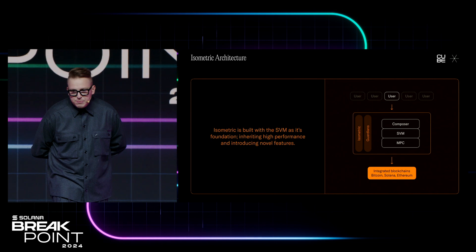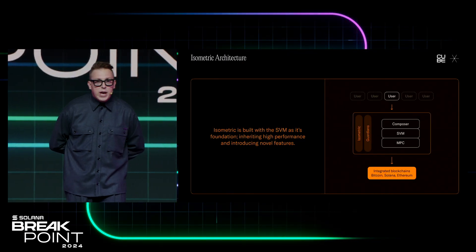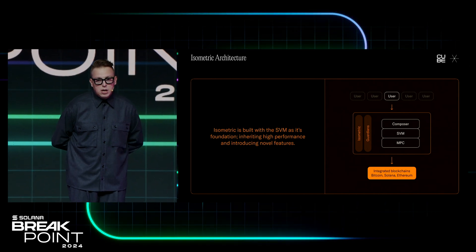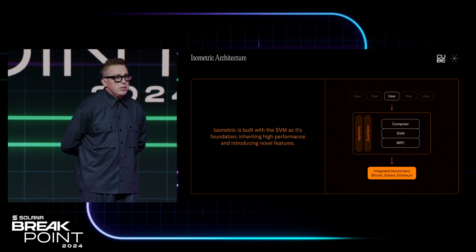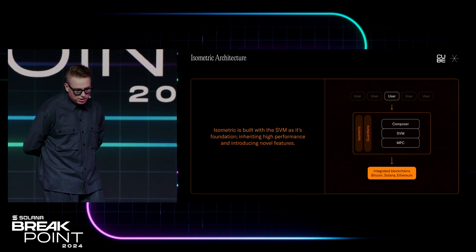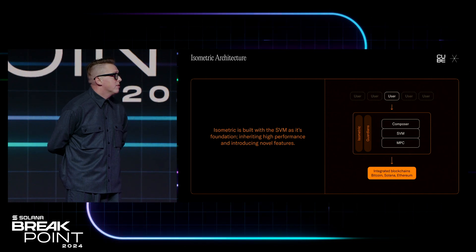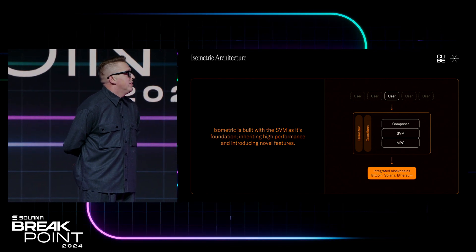To do this, we introduced a component called a composer that takes intents from the user, routes them through SVM on Solana, and then pushes them to the MPC. Through the same layer that Kube is using right now, you will be able to execute intents on the layer ones. Through apps that you can publish and build, you will be able to interact with all the chains that Kube Exchange is currently integrating — right now we support more than ten different chains — and through that network we have executed more than five billion in volume.